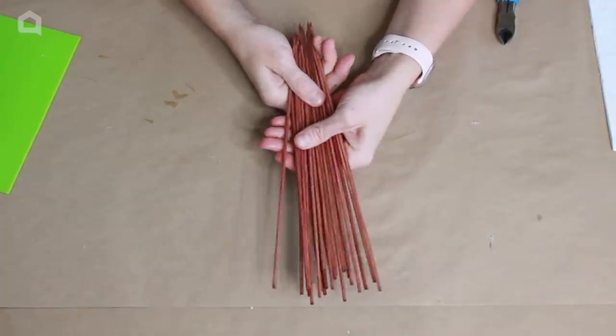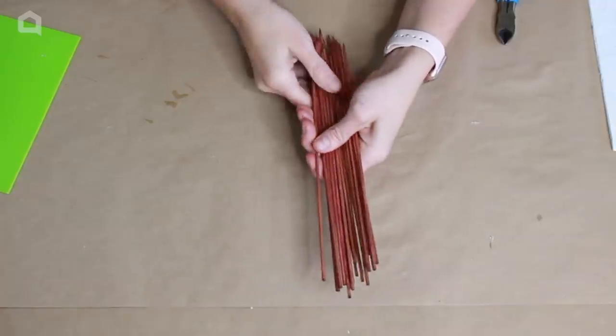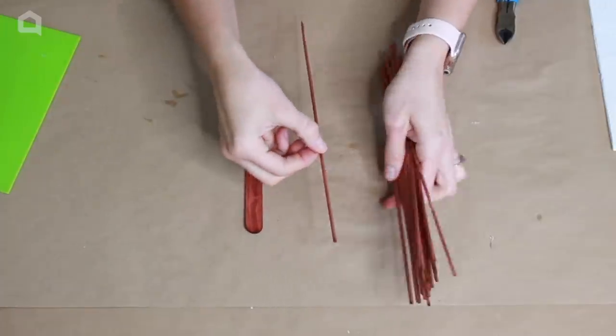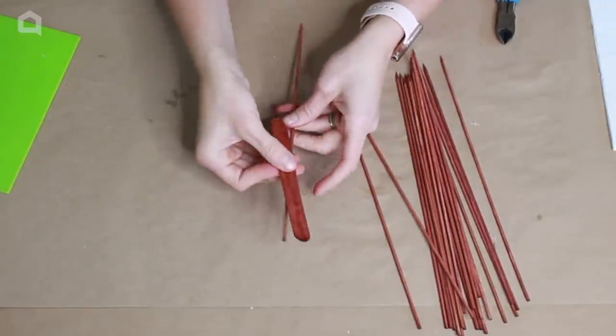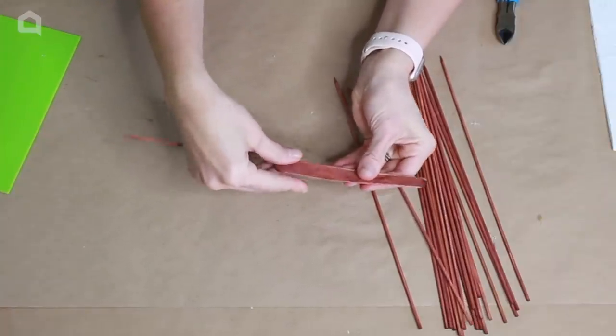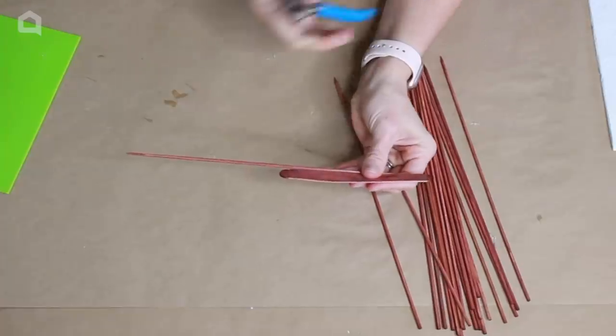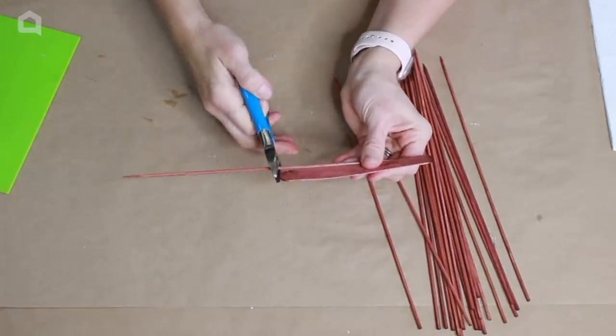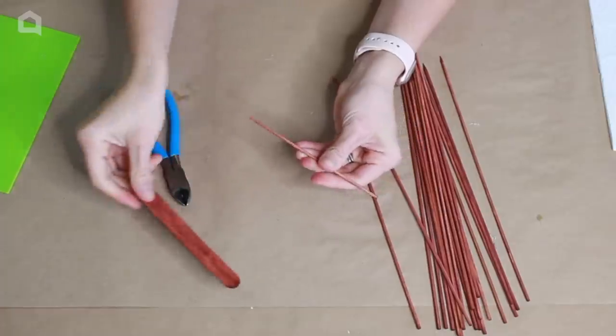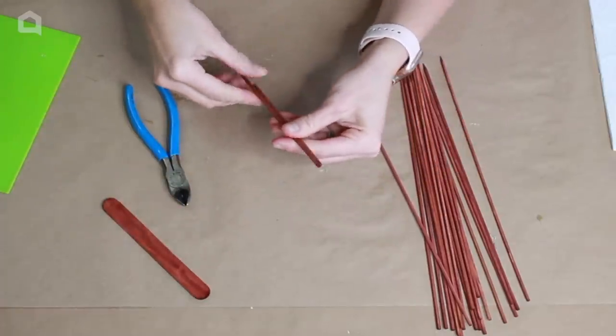Next we're going to be cutting down our skewers. I want them to be the length of my popsicle sticks. I'm going to just take an extra popsicle stick that I'm probably not going to use as kind of my guide. We're going to line it up next to the skewer. I'm just taking some clippers, you can use scissors if you'd like, these are just pliers, to cut multiple skewers to be the same length.